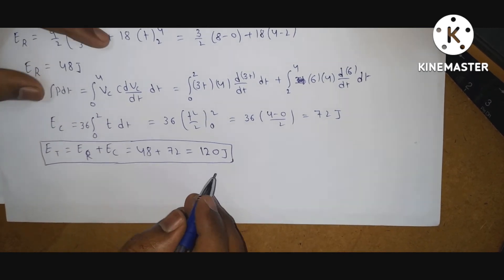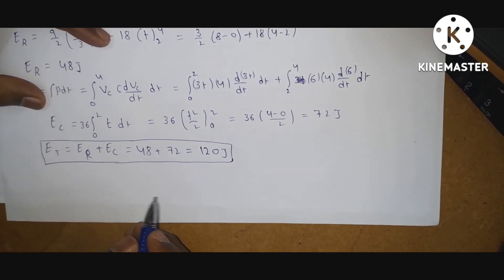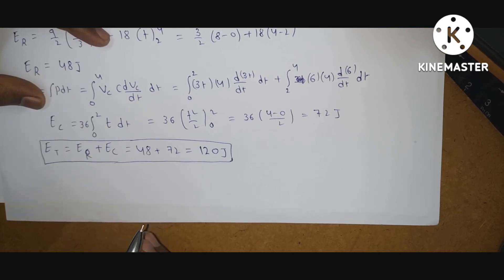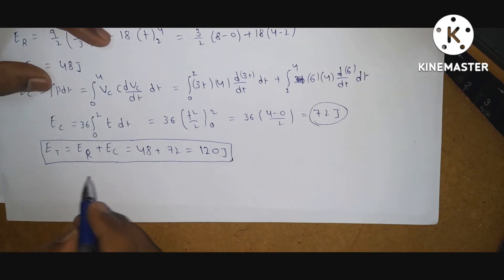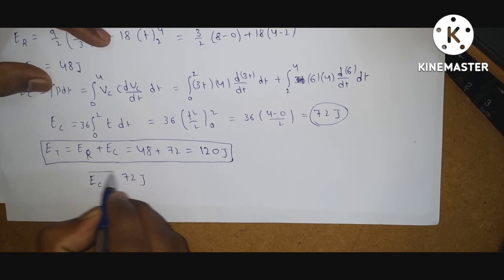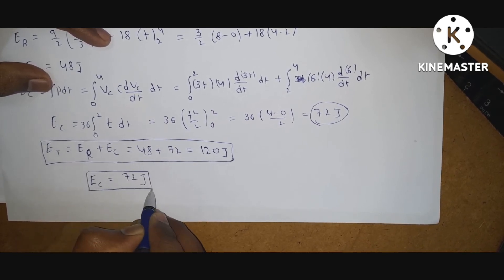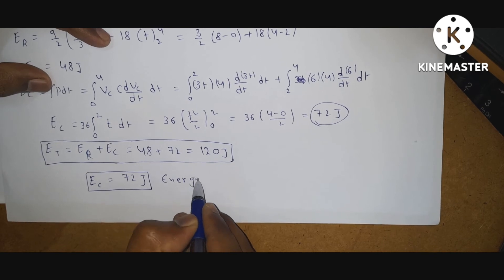For suppose if they ask energy stored by the capacitor only, remember this: if they ask energy stored by the capacitor only, consider only the Ec term, which is 72 joules.